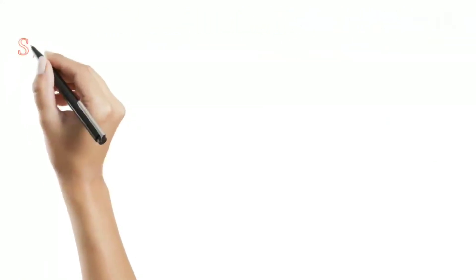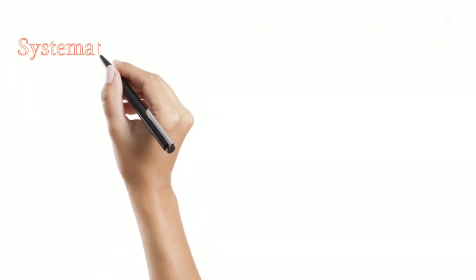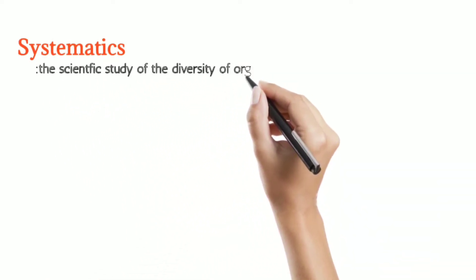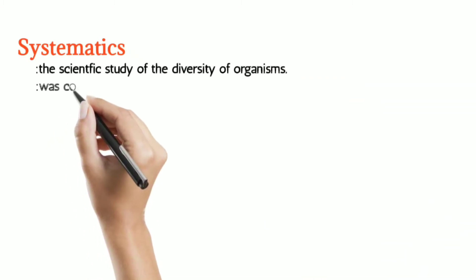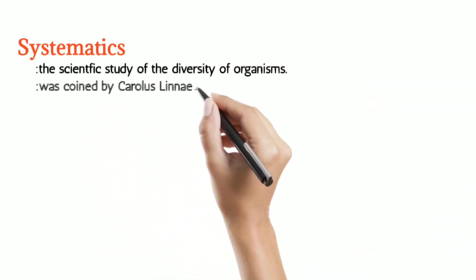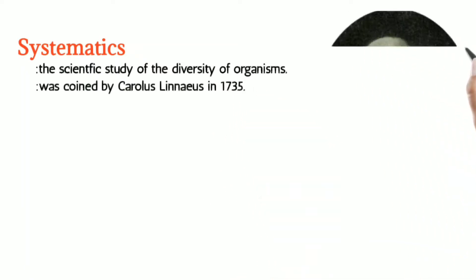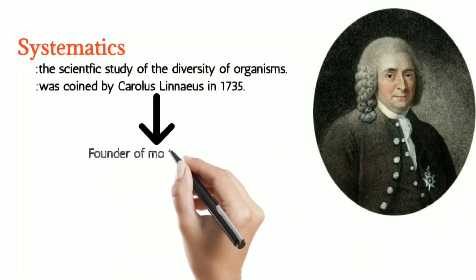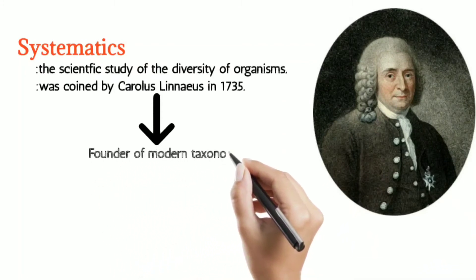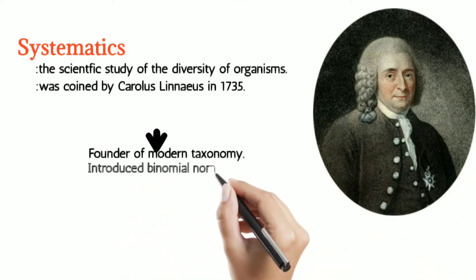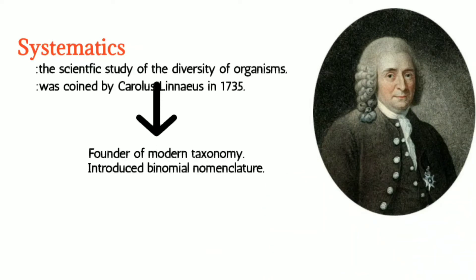We also come across the term Systematics. Systematics is the scientific study of diversity of organisms on this earth. There are many different organisms in our world and all these studies are called Systematics. The term Systematics was coined by Carolus Linnaeus in 1735. He is basically the founder of modern taxonomy, introduced binomial nomenclature, and is also called the father of taxonomy.